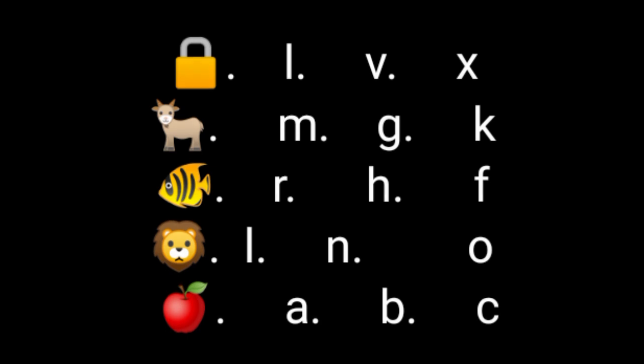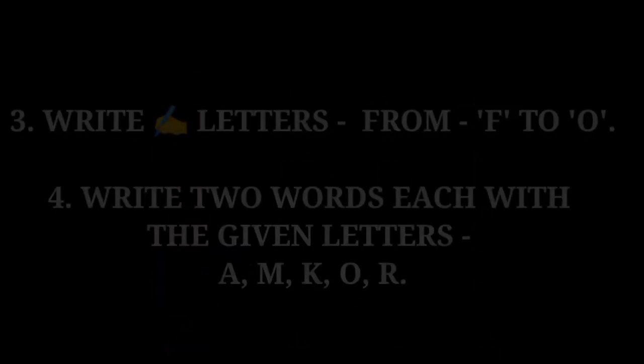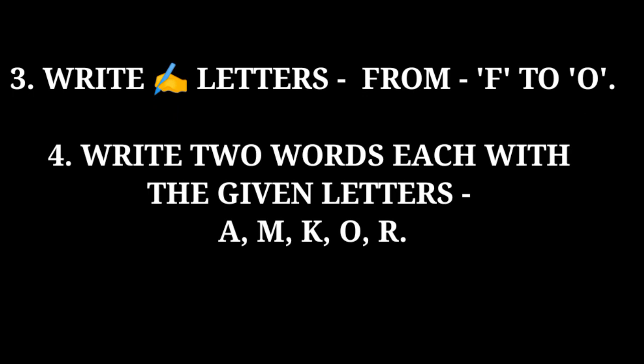Done. Now question number three: write letters from F to O. So start from F and continue until you reach O and stop there. Next, question number four: write two words each with the given letters — A, M, K, O, R. So A for two words, M for two words, and complete in this way.